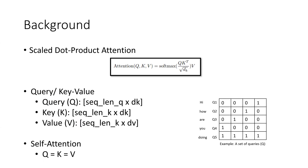Before we dive deeper into the concept of multi-head attention, it is important to understand what scaled dot product attention is. I covered this concept in one of my previous videos in detail, but just to refresh our memory, I will reiterate some of the important terms. The scaled dot product attention is a method to calculate attention for a given input. What it takes in is these three matrices: Q, K, and V. Q is the query, K is the key, and V is the value. Then it does this operation on those matrices — they can actually be more than two-dimensional — and it gives us the attention.